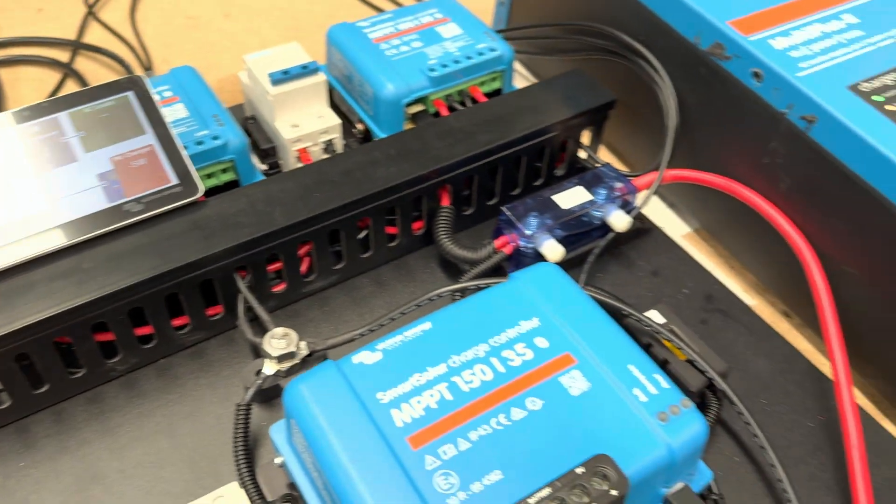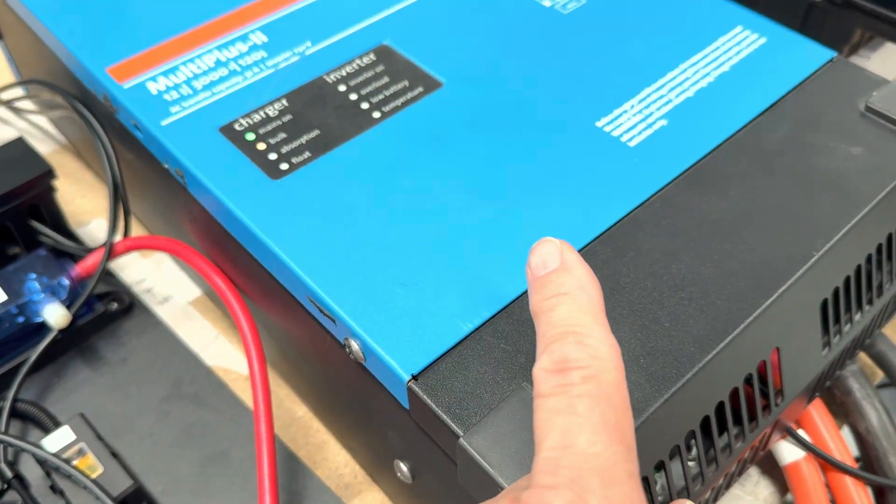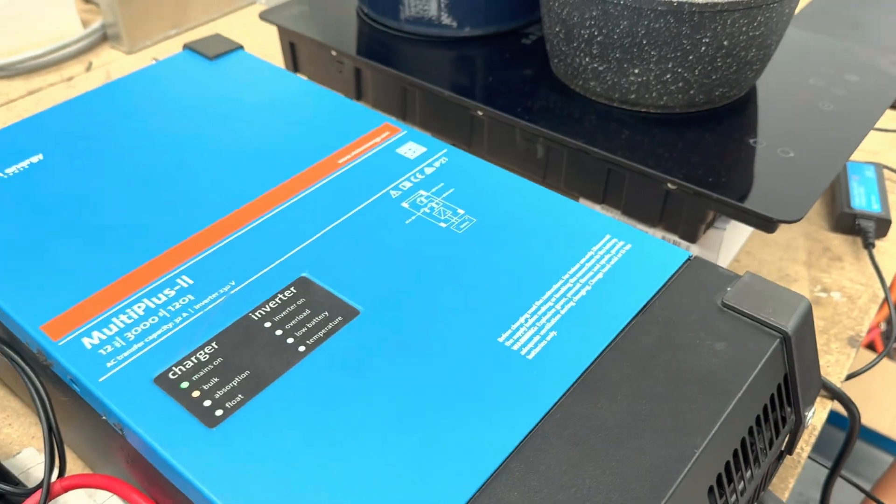Now we're going to reverse it. Now we're going to turn off the input power and we're going to put the induction on and pull the power out.